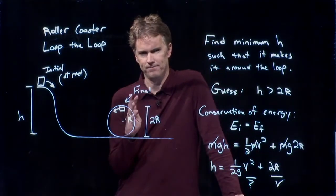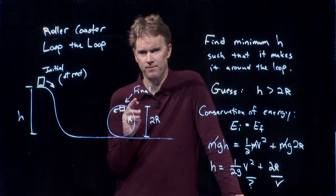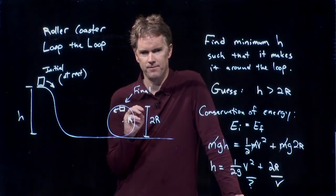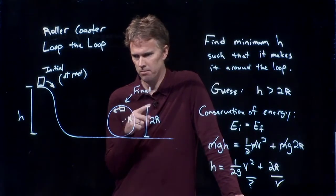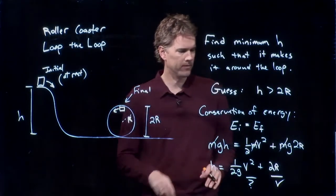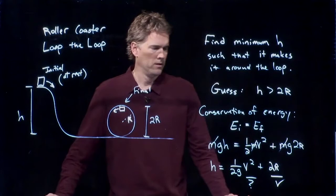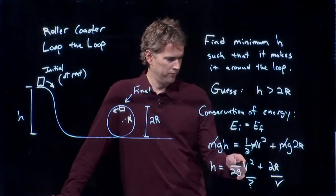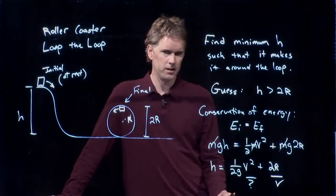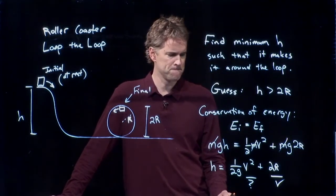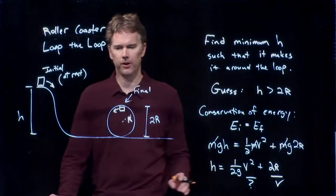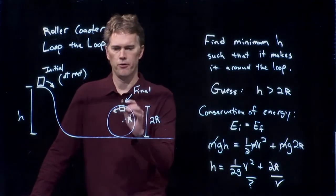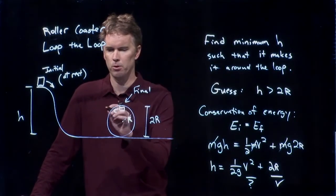Who has a thought on how we can get v? Connor, you want to hand the mic to Connor? So Connor, we're looking for v. That's the thing that we don't know in this equation. Do you have any ideas on how we can get that? To find some of the forces in the radial direction. Okay. Excellent. So let's go back to our free body diagram for this roller coaster. We'll draw it right here.